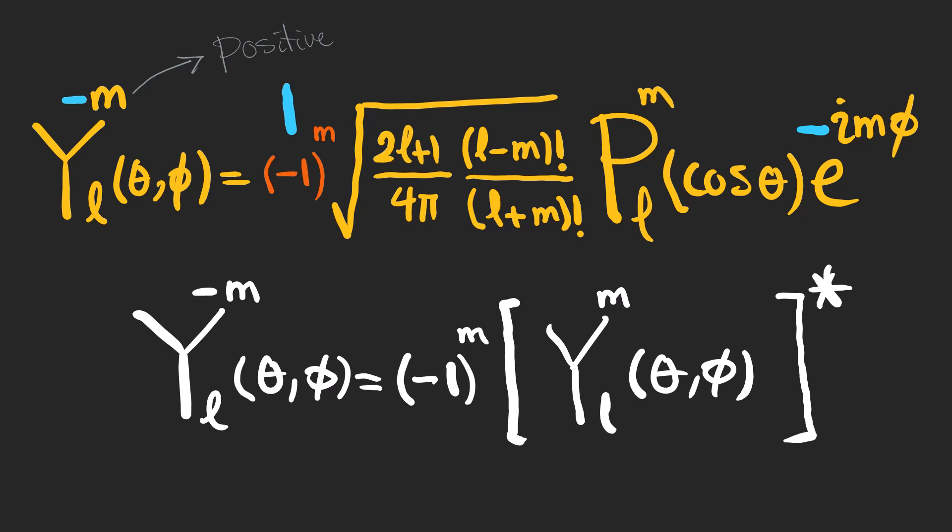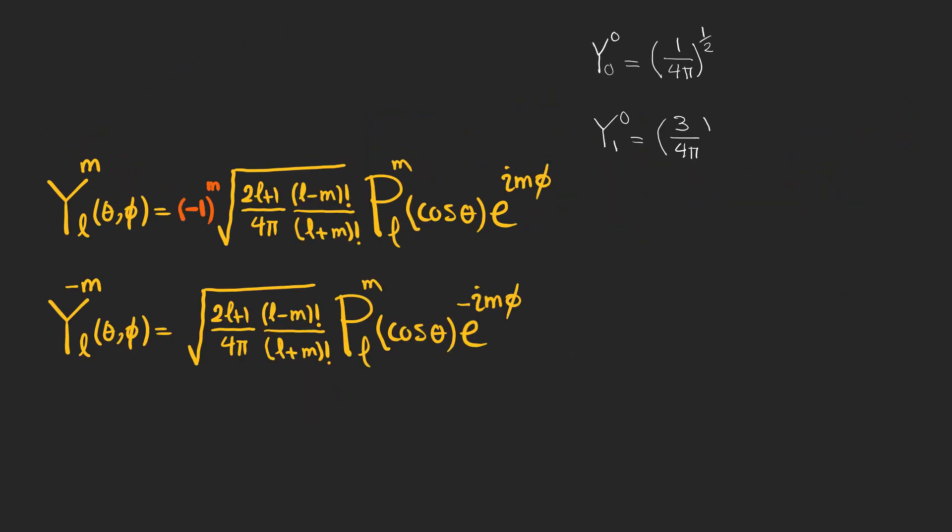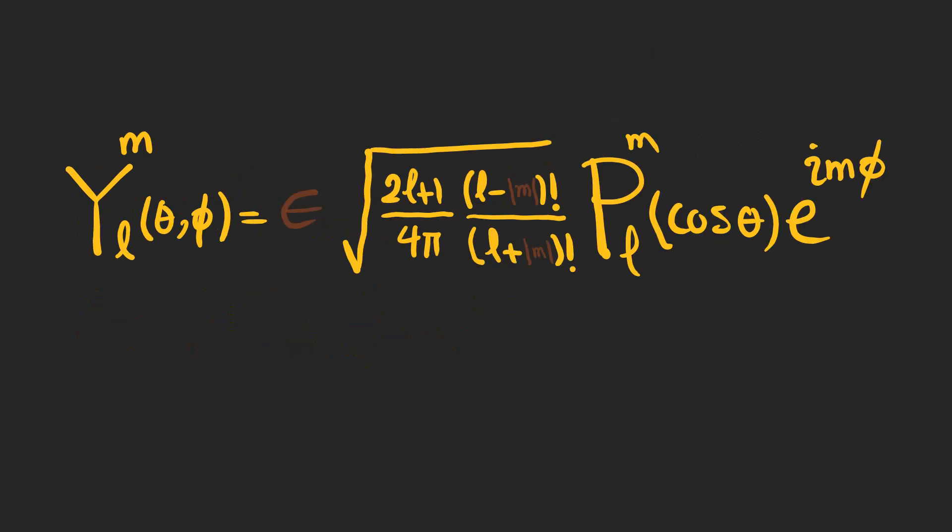These are some examples of spherical harmonics. Pay attention that M is positive here, and the notation might be different in some textbooks. For example, in Griffiths, the notation is like this.